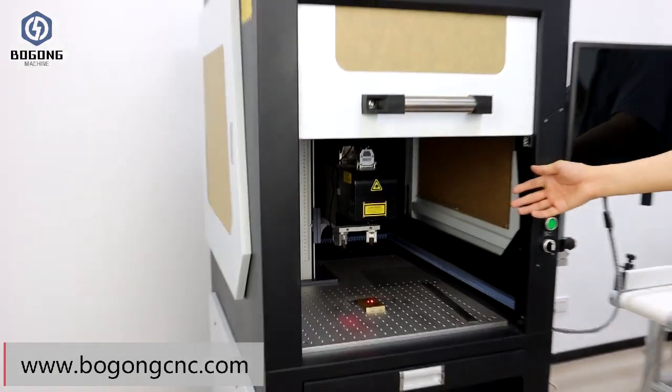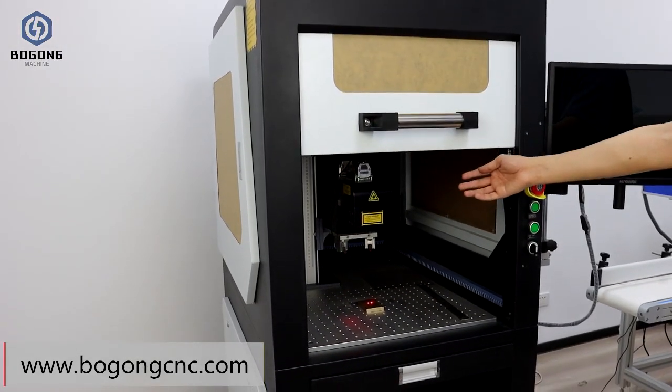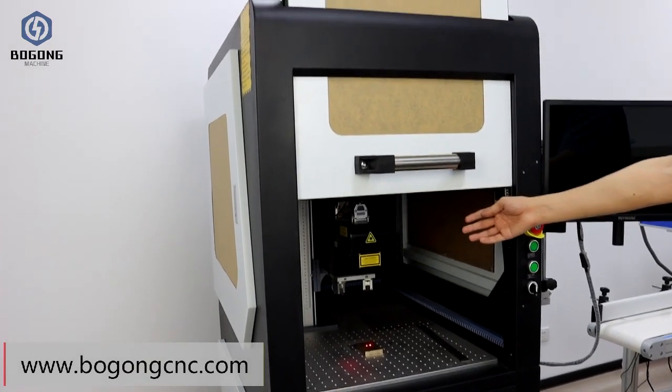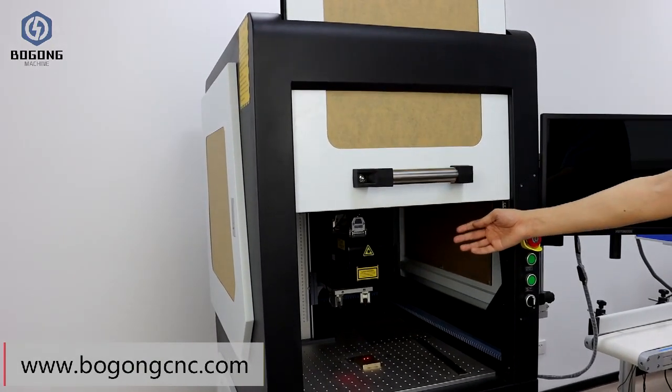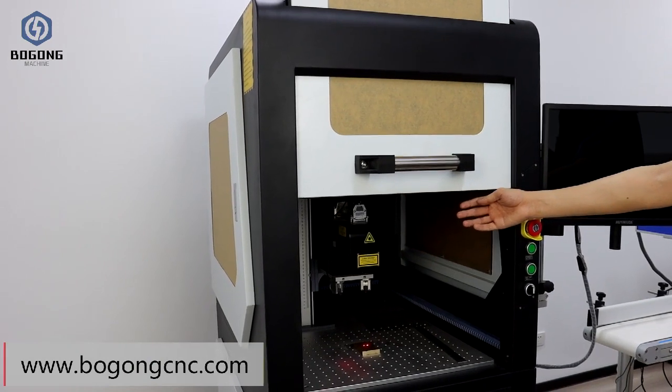In such a machine, one of the most important parts is the galvanometer. It affects the final effects of the whole machine-made products.